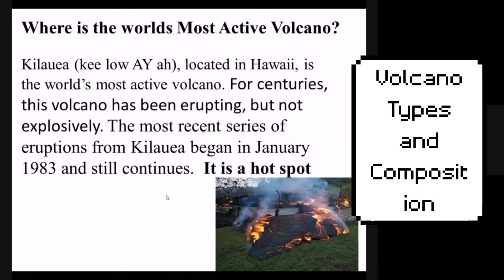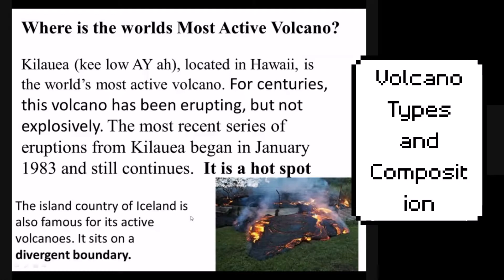Kilauea has been erupting for over 37 years. It is considered a hotspot volcano and has very dark basaltic lava. Hotspot volcanoes tend to erupt for long periods of time, like Kilauea does. Iceland also has a hotspot volcano, but it's also on a divergent boundary.